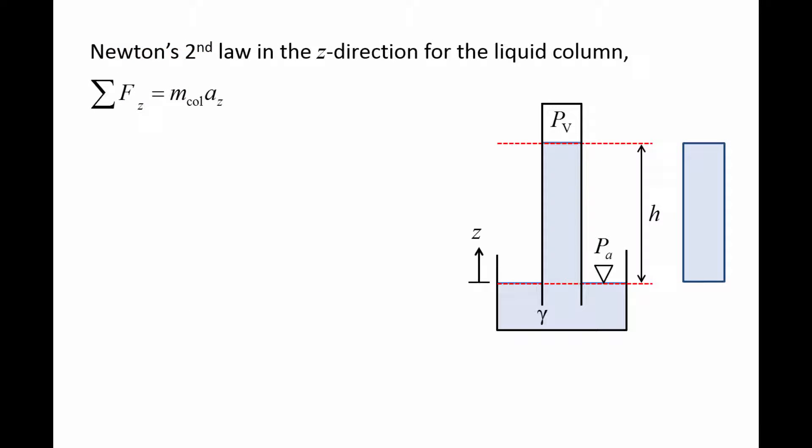We now apply Newton's second law in the vertical direction for just the liquid column. The sum of the forces acting on the column is equal to the column's mass times its acceleration. Since the column is at rest, its acceleration is zero.